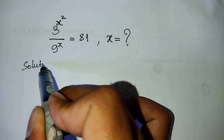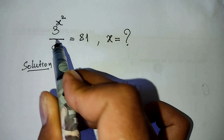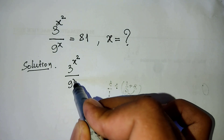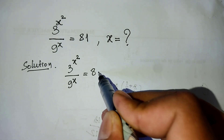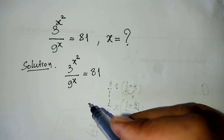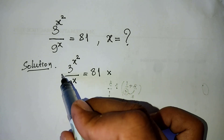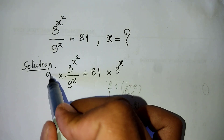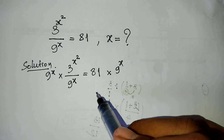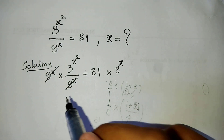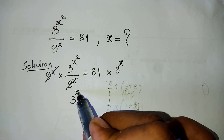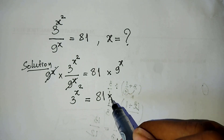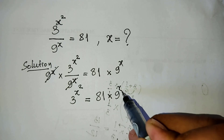Solution: here is 3 power x squared divided by 9 power 8 equals 81. I multiply both sides of this equation with 9 power 8. So, if we simplify, we get 3 power x squared is equal to 81 times 9 power 8.